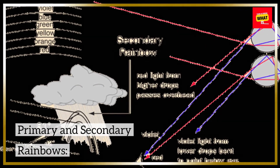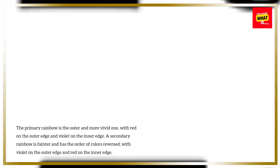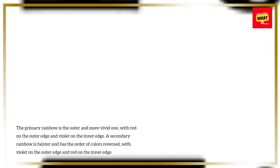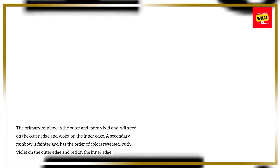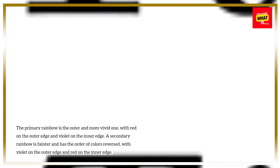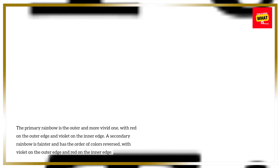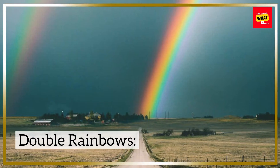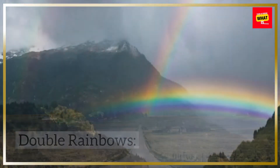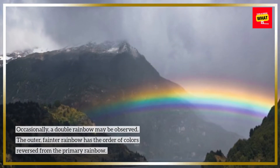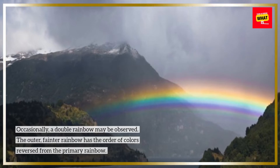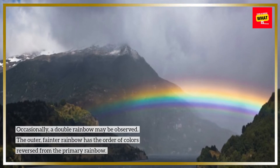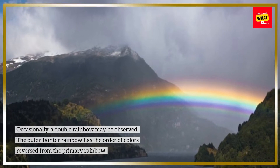4. Formation of a full rainbow. The primary rainbow is the outer and more vivid one, with red on the outer edge and violet on the inner edge. A secondary rainbow is fainter and has the order of colors reversed, with violet on the outer edge and red on the inner edge. Occasionally, a double rainbow may be observed, where the outer, fainter rainbow has the order of colors reversed from the primary rainbow.